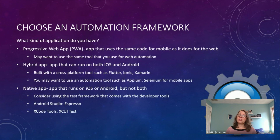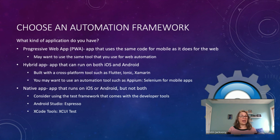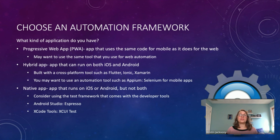First, you need to choose an automation framework, and what kind of framework you choose may depend on what kind of application you have. I'll go through the different types of applications and make some recommendations based on my experience. You might have a progressive web app, which uses the same code for mobile as it does for the web — developers write the code and it just works on both web and mobile browsers.